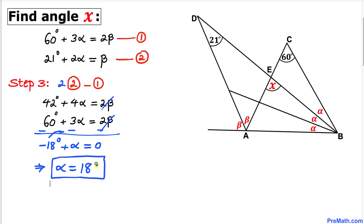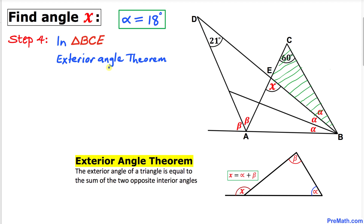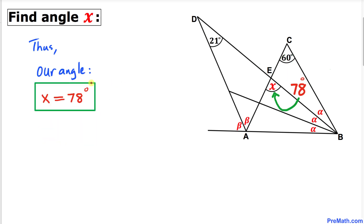In our final step, let's focus on triangle BCE and recall the exterior angle theorem. Angle x is our exterior angle and that is equal to the sum of the two opposite interior angles: alpha and 60 degrees. Therefore x equals alpha plus 60 degrees. We know alpha equals 18 degrees, so x equals 18 degrees plus 60 degrees, giving us angle x equals 78 degrees. That's our final answer.